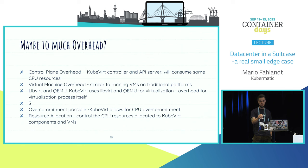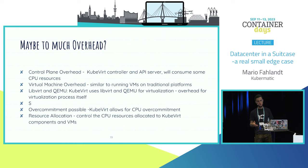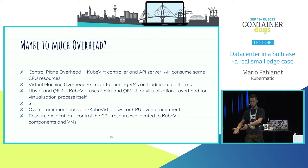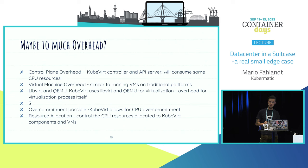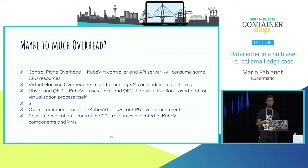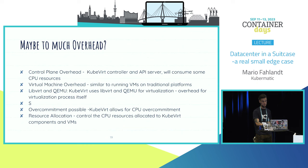The KubeVirt controller and API server will consume some resources, but this is negligible. Virtual machine overhead you'll have regardless - if you create a VM, it needs VM resources. KubeVirt uses libvirt and QEMU, so this overhead is there, but it's a virtualization-based overhead, not a KubeVirt-specific one. The cool thing is we can use overcommitment - we can spawn many more VMs than we actually have cores. We also have resource allocation to limit what KubeVirt itself takes.